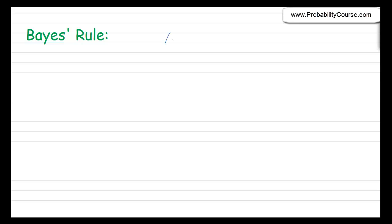Here is a general scenario. Suppose that I have two events, A and B, and suppose that I'm interested in probability of B given A. But I don't know what that is. What I have is probability of A given B. So the question is, how can I use probability of A given B to obtain probability of B given A?